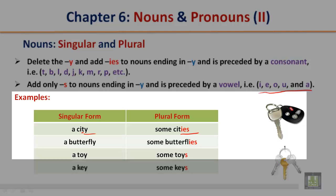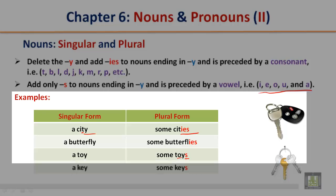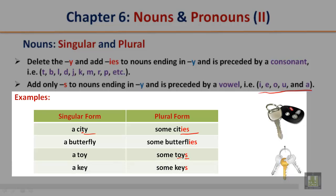Singular form: a toy. Plural form: some toys. You only add an S in this example because it ends in Y, but before the Y there is a vowel, so you would only add an S. Singular form: a key. Plural form: some keys.